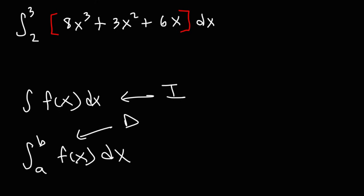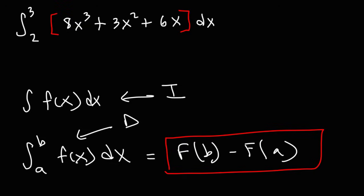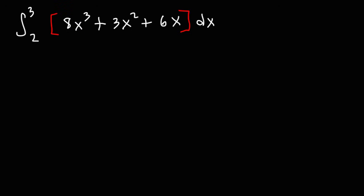The antiderivative of a function f of x is capital F. To evaluate the definite integral, once you find the antiderivative you need to plug in the limits of integration, and so the value of the definite integral is going to be F of b minus F of a. But let me show you the process by which we can evaluate a definite integral. So let's start with this example.